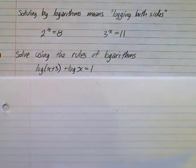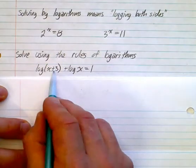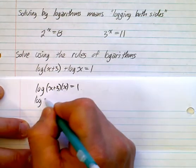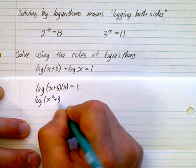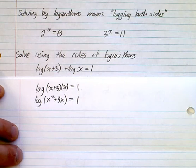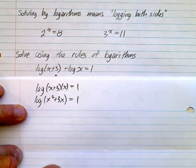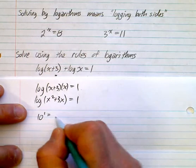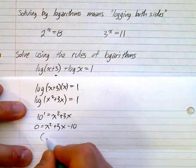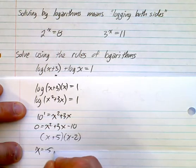Now let's look at solving using the rules of logarithms. In this case the logs are being added, so you're going to have log of x times x plus 3 equals 1. That gives log of x squared plus 3x equals 1. We can convert this into exponential form — the base here is 10 — so 10 to the power of 1 equals x squared plus 3x. Make it equal to 0, subtract 10, and factor: x plus 5 times x minus 2. You get two solutions: x equals negative 5 and positive 2.